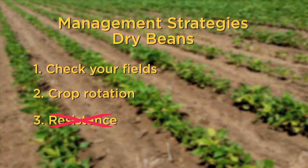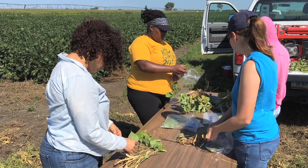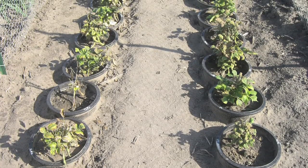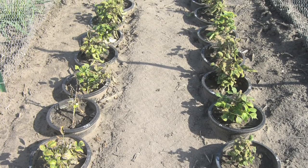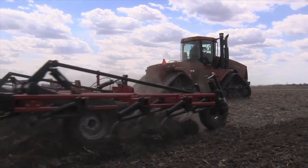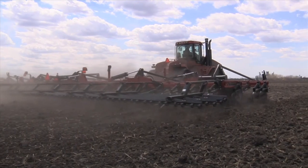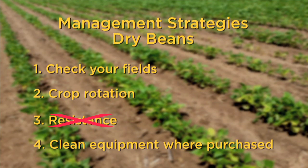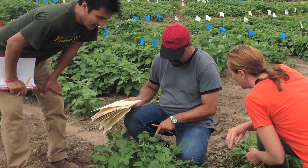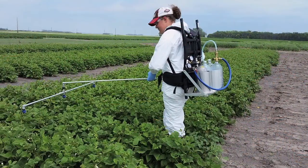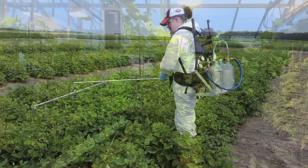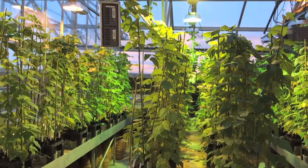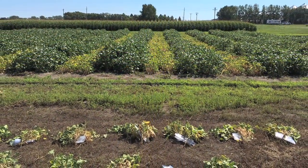Resistance is not an option yet, but NDSU is working to identify resistance and incorporate it into dry bean varieties. Unfortunately, it's impossible to prevent the spread of the nematode, but you may be able to slow the spread if you know which of your fields are infested. Also, it's critical that if you purchase equipment from an area known to have SCN, clean that equipment off where you bought it. NDSU has a team of scientists working on the SCN threat to dry beans and is thankful for the research funding received as we develop management tools and strategies for our region.